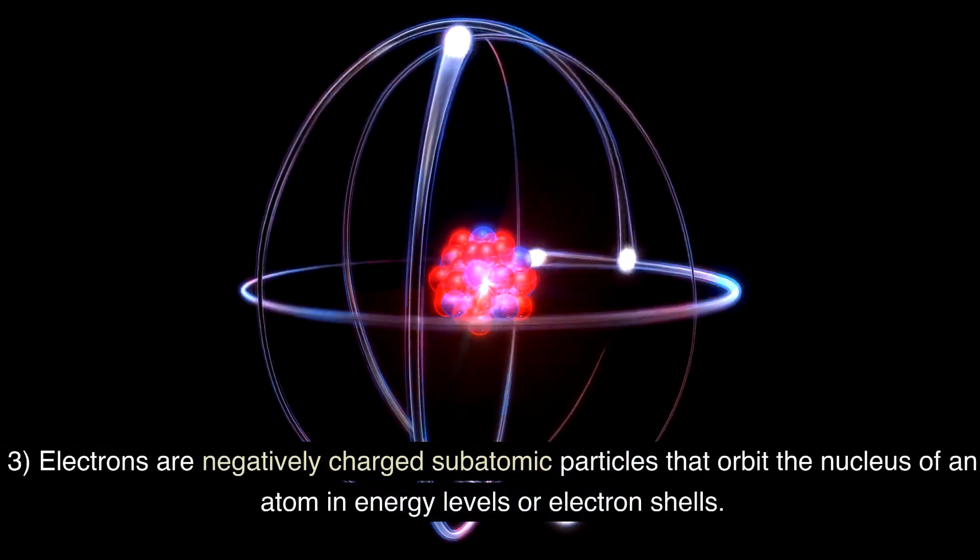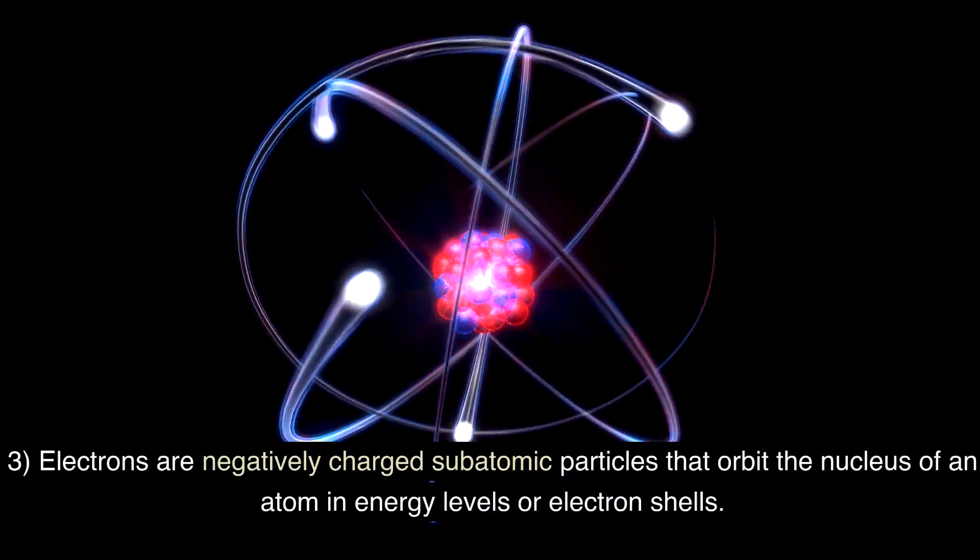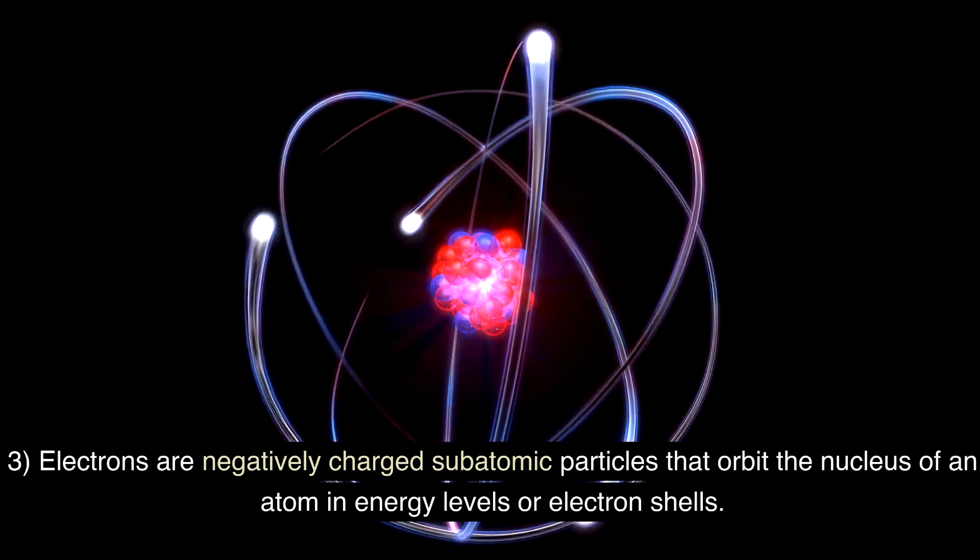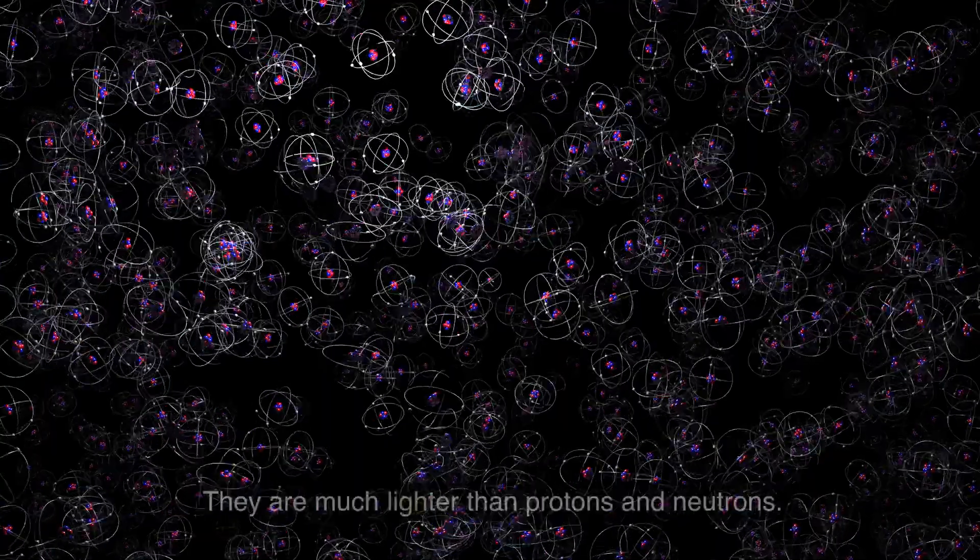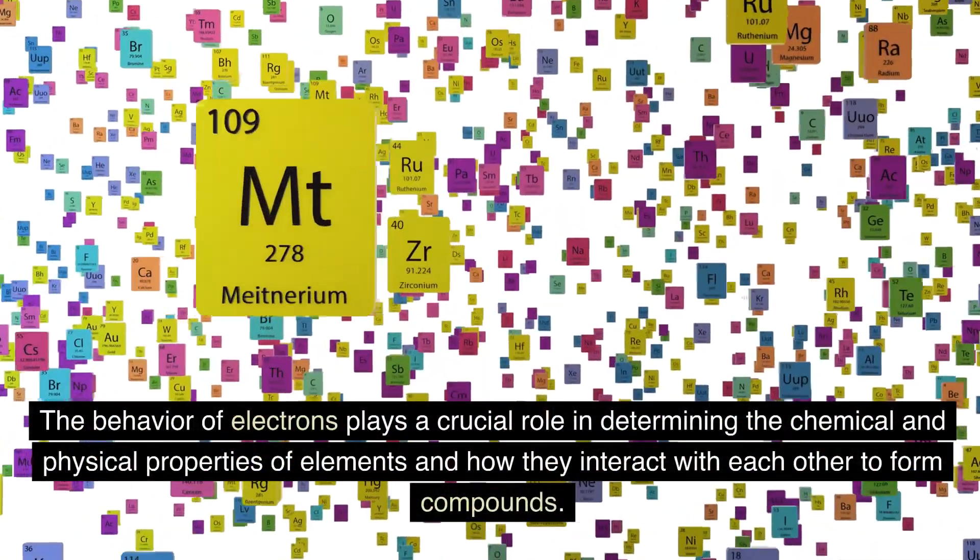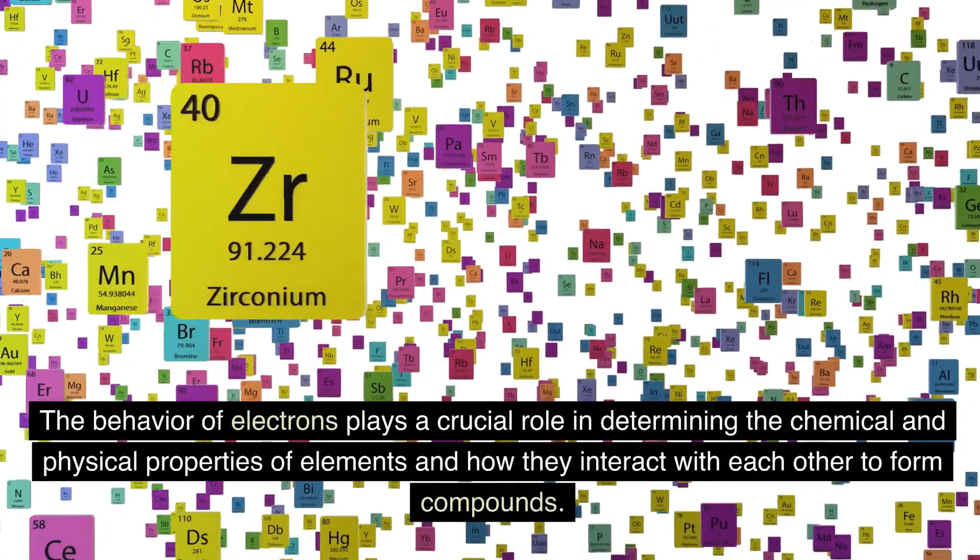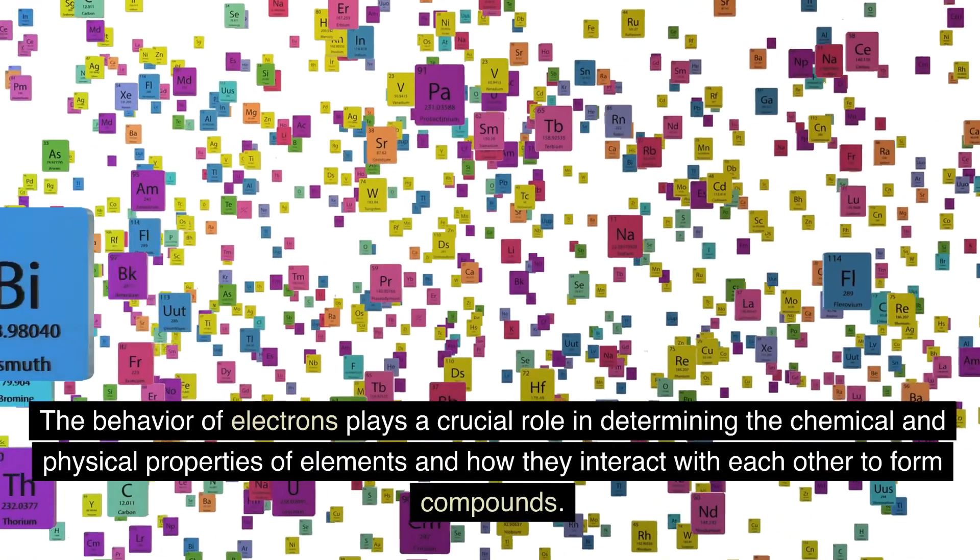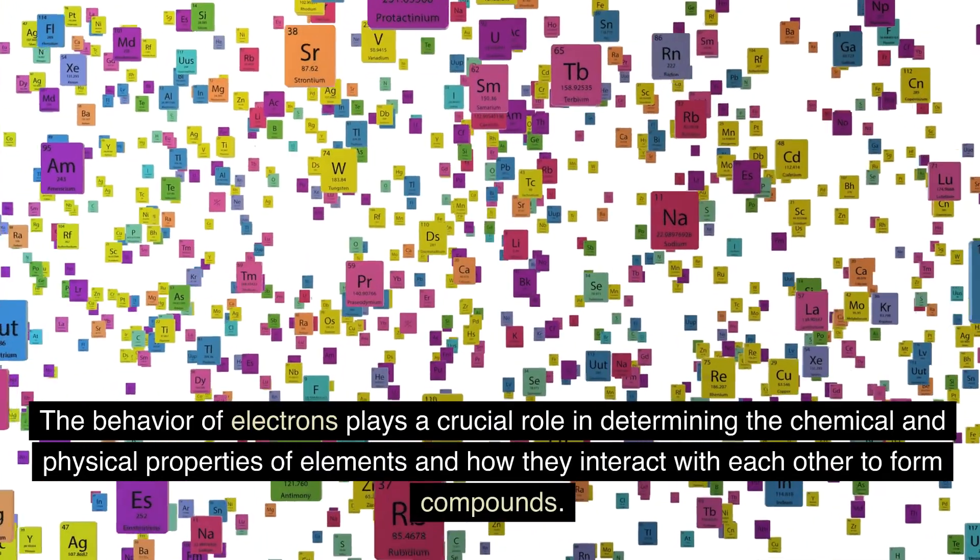Electrons are negatively charged subatomic particles that orbit the nucleus of an atom in energy levels or electron shells. They are much lighter than protons and neutrons. The behavior of electrons plays a crucial role in determining the chemical and physical properties of elements and how they interact with each other to form compounds.